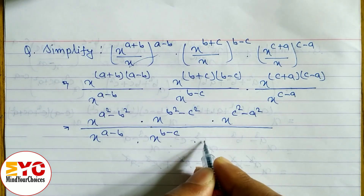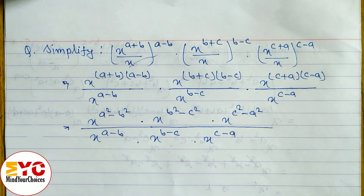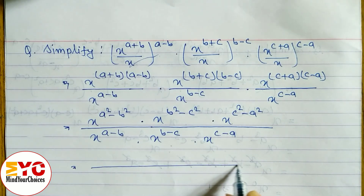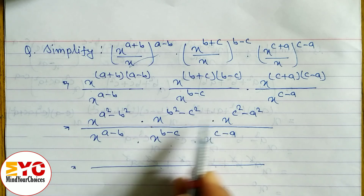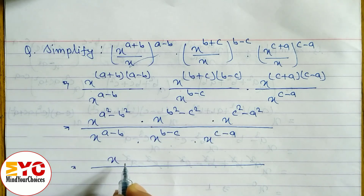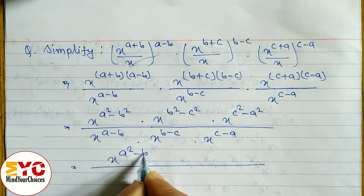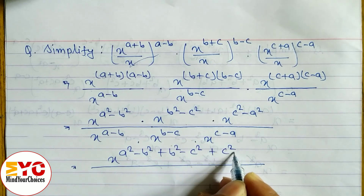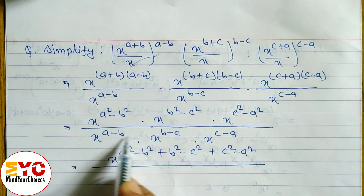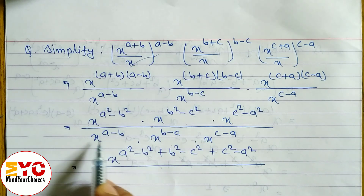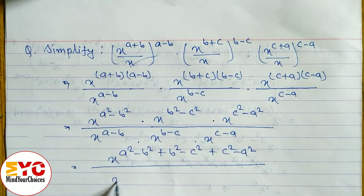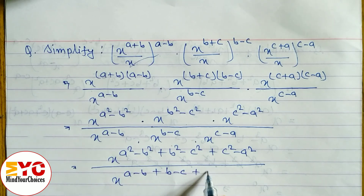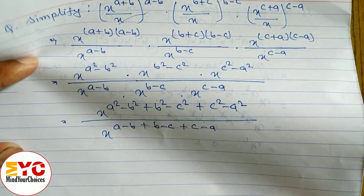In the next step, in the numerator the base is the same — x, x, x — and in multiplication we add the powers, so we write a²-b² + b²-c² + c²-a². Similarly in the denominator, the base is the same, and we add the powers: (a-b) + (b-c) + (c-a). Hope you understand up to here.